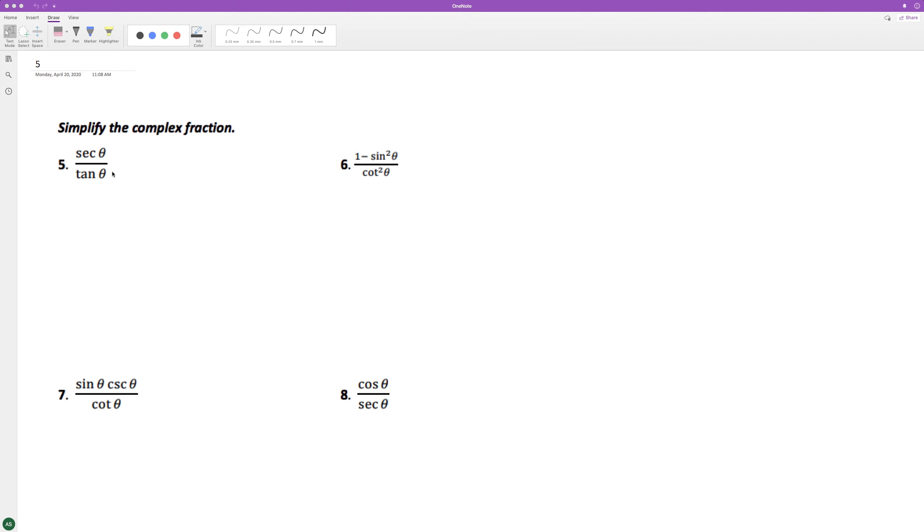Simplifying complex fractions. So starting off with the first part here, we can break this down to 1 over cosine theta. It's the same thing as the secant.